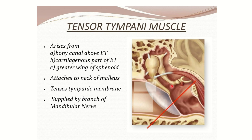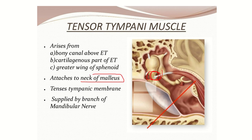Looking at another view of the tensor tympani muscle, we can see it arises from the bony canal above the Eustachian tube — specifically from the upper part of the Eustachian tube, the cartilaginous part of the Eustachian tube (which has both cartilaginous and bony parts), and the greater wing of the sphenoid bone. It then attaches to the neck of the malleus.